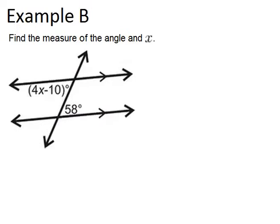In example B, it says find the measure of the angle and x. So again, we have two lines marked as being parallel and a transversal that crosses them in the middle.